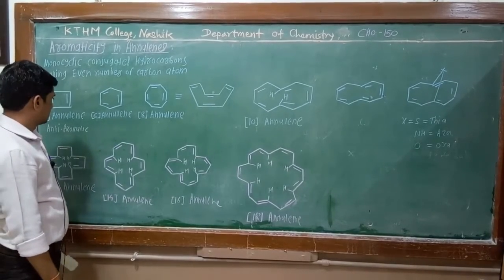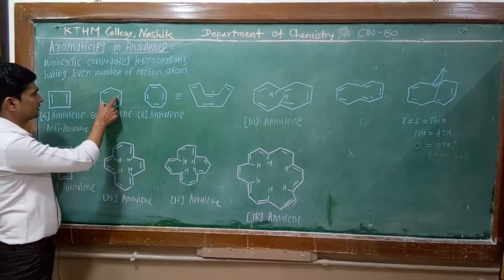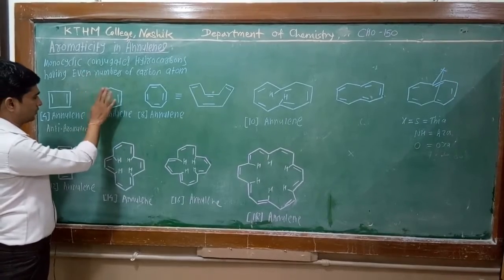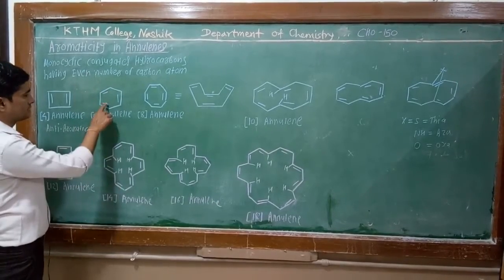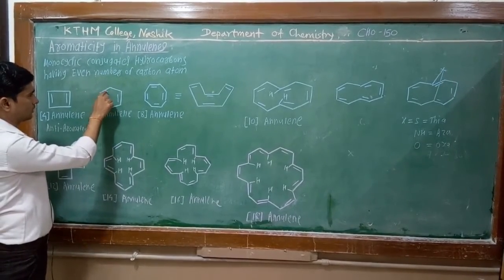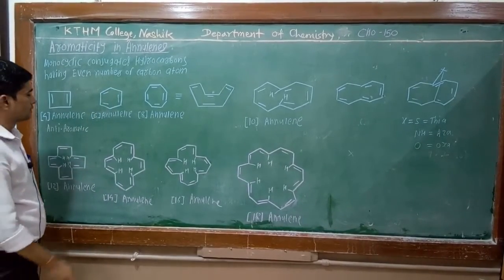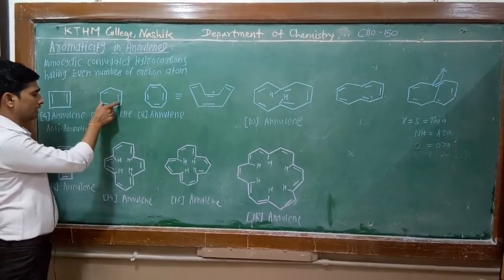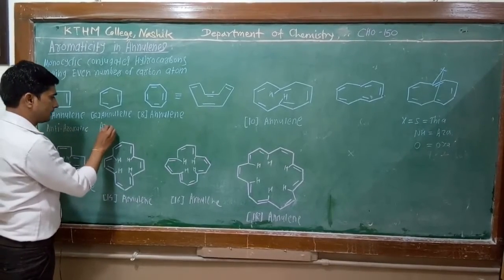6-annulin is nothing but benzene. This is cyclic, planar, fully conjugated, and contains 6 pi electrons because there are 3 pi bonds, therefore it has 6 pi electrons. So this is aromatic.